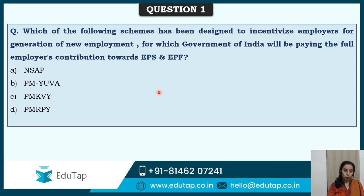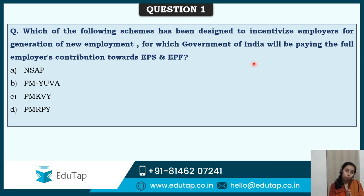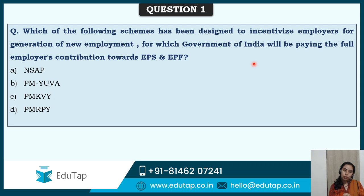Here is your very first question from the social security scheme. The question is: which of the following schemes has been designed to incentivize employers for the generation of new employment, for which the Government of India will be paying the full employer's contribution towards EPS and EPF? You have to identify the scheme. The options are NSAP, PMUVY, PMKVY, and PMRPY.